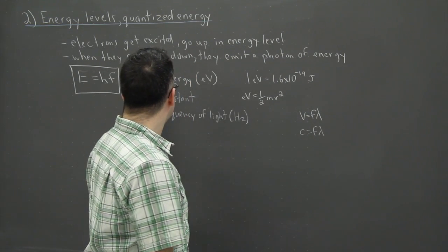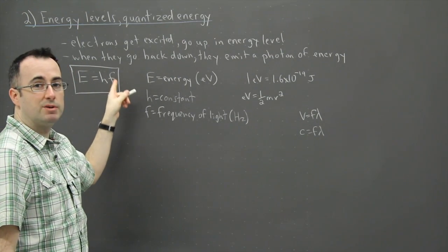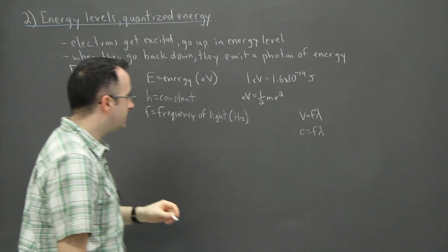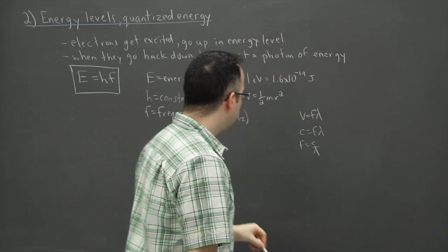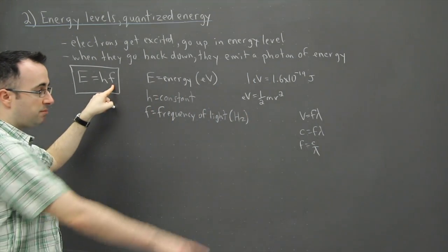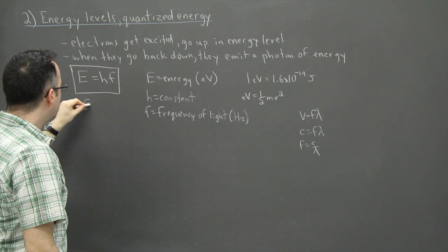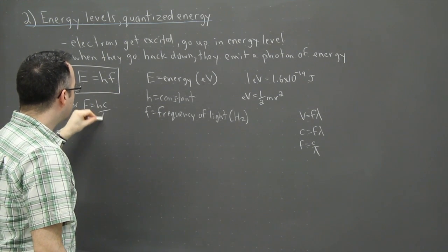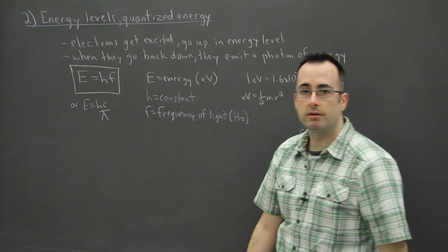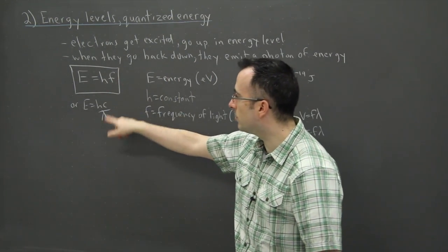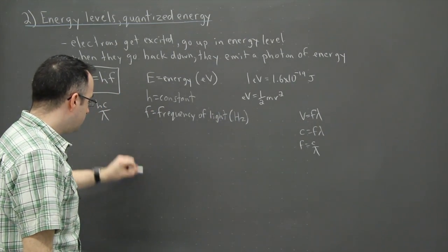If we want to replace frequency, we can get wavelength instead. Get F by itself: C over lambda. That means anytime I see an F, I replace it with C over lambda. So I could say E equals HC over lambda. Basically it depends if you want the frequency or the wavelength. This is what really happens.